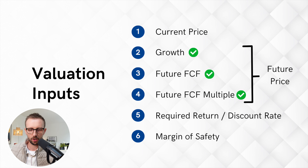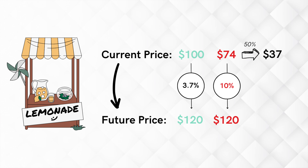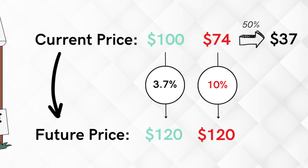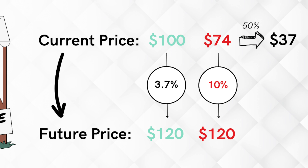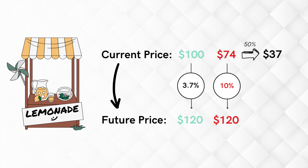This brings us to the last input: the so-called margin of safety. Obviously we have to make assumptions to arrive at the future price of $120. To account for the possibility that we are wrong — maybe the business generates less free cash flow, maybe it trades at a lower valuation multiple, or our growth rate estimate could be off — we apply a margin of safety. For example, you could demand a margin of safety of 50%, meaning you are not willing to pay more than 50% of $74, which translates to $37. It's basically just another safety cushion added to your approach.